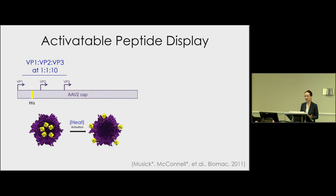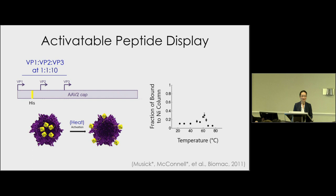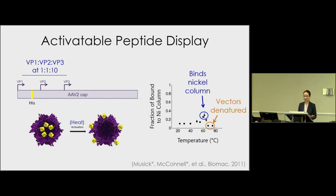The endogenous stimuli for this conformational switch are pH and other endosomal factors, but in the test tube we can induce this switching just by heating the capsids to about 60 degrees Celsius. When these his-tags are externalized, we can capture these viruses on a simple nickel column assay. You can see on the x-axis viruses incubated at various temperatures — around 60 degrees Celsius is where we capture most viruses because that's when the his-tags are externalized. At higher temperatures the capsids denature and genomes are lost, so you see a drop.